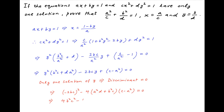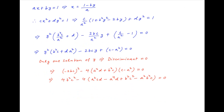This implies that 4b squared c squared minus 4 times, in brackets, a squared cd minus a to the power 4 times d plus b squared c squared, minus b squared c, is equal to 0. This equation simplifies to minus 4a squared multiplied by, in brackets, cd minus a squared d plus b squared c, minus b squared c is equal to 0, which implies that a squared d plus b squared c is equal to cd.